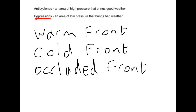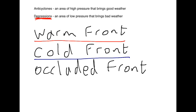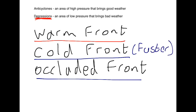Depressions are areas of low pressure that bring bad weather. Depressions typically have three fronts. A front is the leading edge of a body of air — a warm front is the leading edge of a body of warm air, and a cold front is the leading edge of a body of cold air. An occluded front occurs when the cold front catches up with the warm front and starts to mix. Cold fronts move faster than warm fronts, and therefore when the cold front catches up with the warm front, it gives us an occluded front.